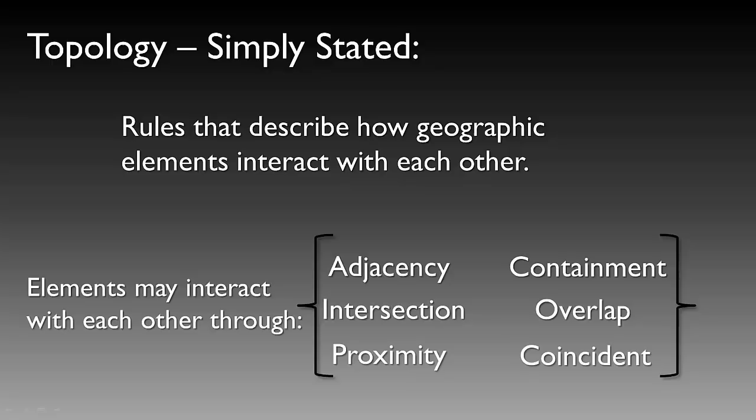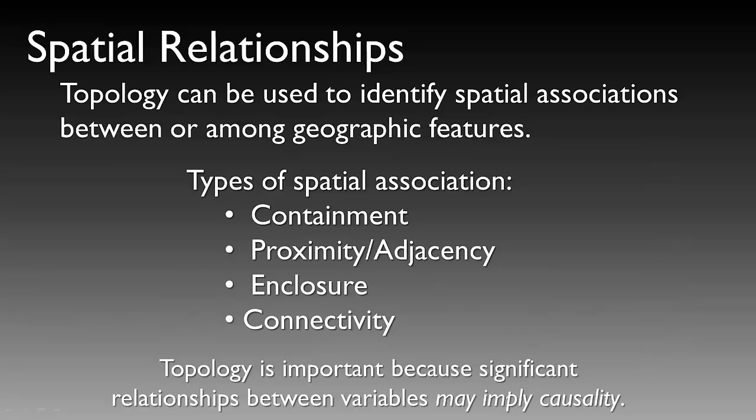Elements may interact through a series of different actions including adjacency, intersection, proximity, containment, overlap, and coincidence. Topology can be used to identify spatial associations between or among geographic features. Some of these spatial associations include containment, proximity or adjacency, enclosure, or connectivity.